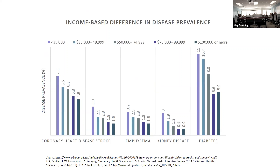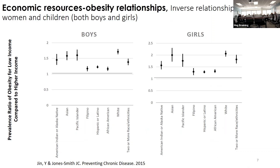If we look at specific chronic conditions — coronary heart disease, stroke, emphysema, kidney disease, and diabetes — this inverse relationship between economic resources and health outcomes is seen across all of them. The light purple bars are the lowest income group and the teal bars are the higher income group, and you can see this graded relationship between higher prevalence of these chronic conditions and lower income.